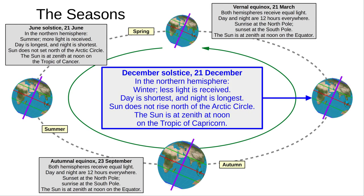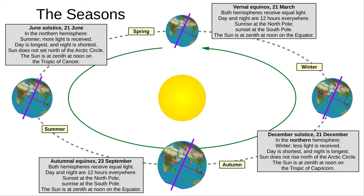And on the 21st of December is the December solstice, or winter solstice in the northern hemisphere. We receive less light and have the shortest day and longest night. The sun doesn't rise anywhere north of the Arctic Circle and is at zenith at noon on the Tropic of Capricorn. This is the start of winter.